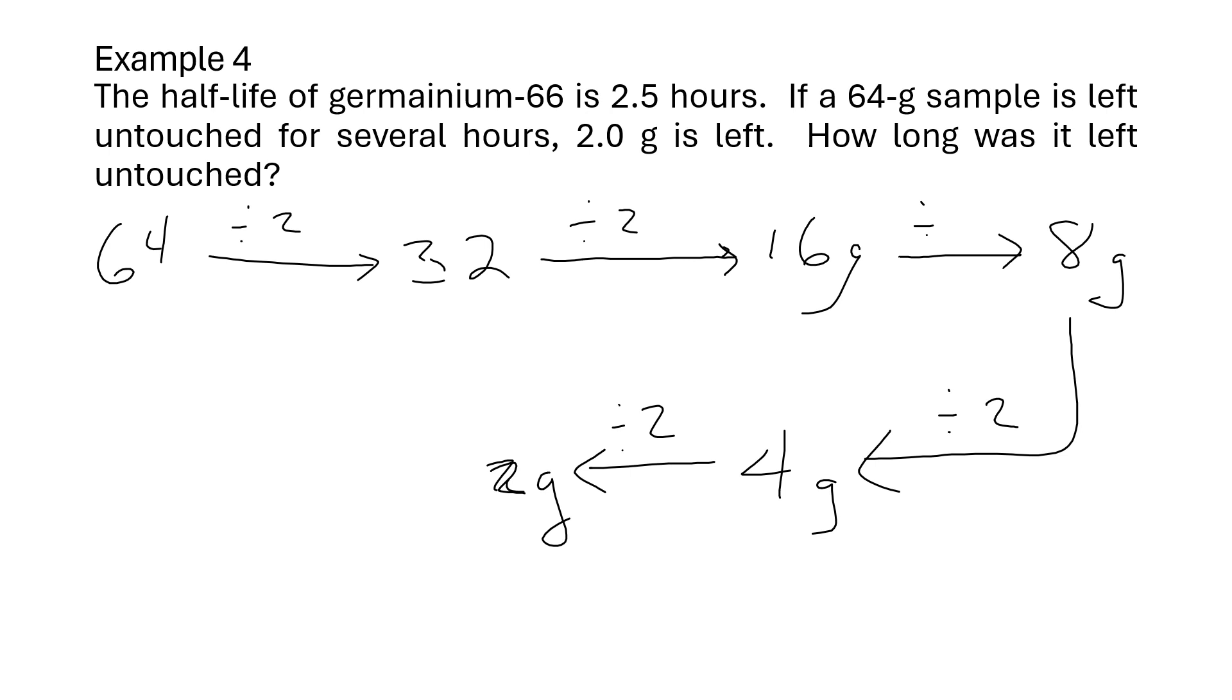So we went through 1, 2, 3, 4, 5 half-lives. So that means we're going to take 2.5 hours, times it by 5, and we get 12.5 hours. So that's how long the sample wasn't touched.